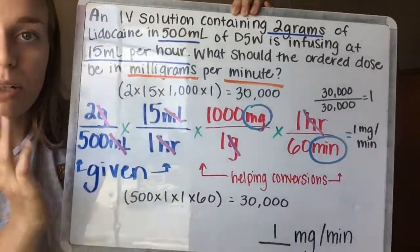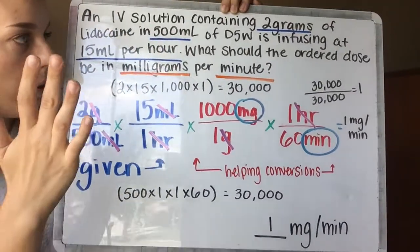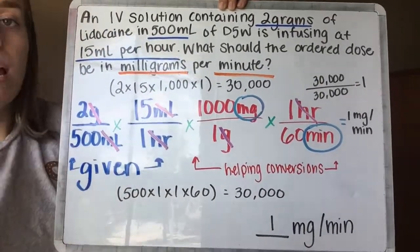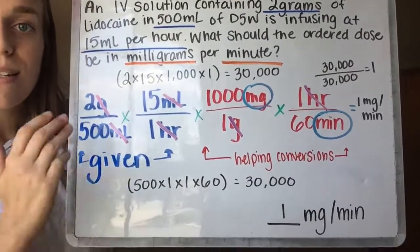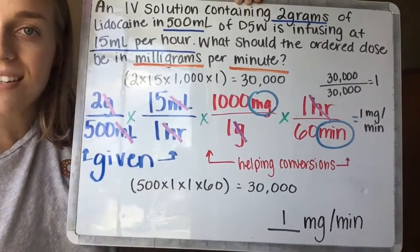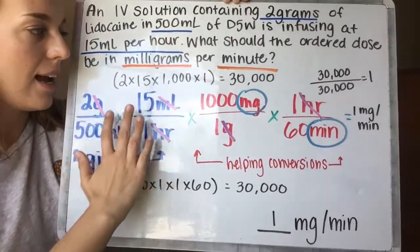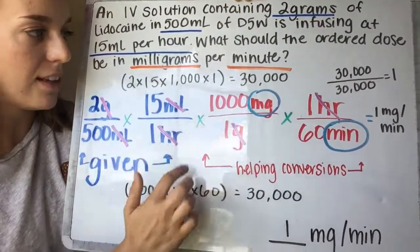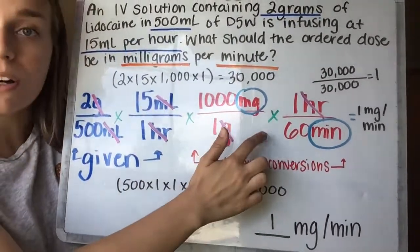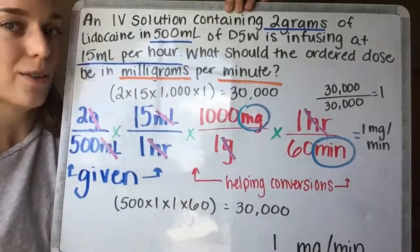So again, we're going to look back. Is that logical that it's 1 milligram per minute? It's looking logical to me, so we are confident this is our answer. And that is how you set up and you are confident that everything is going to cross out. You use what you already know to get to the answer that you need to get to.